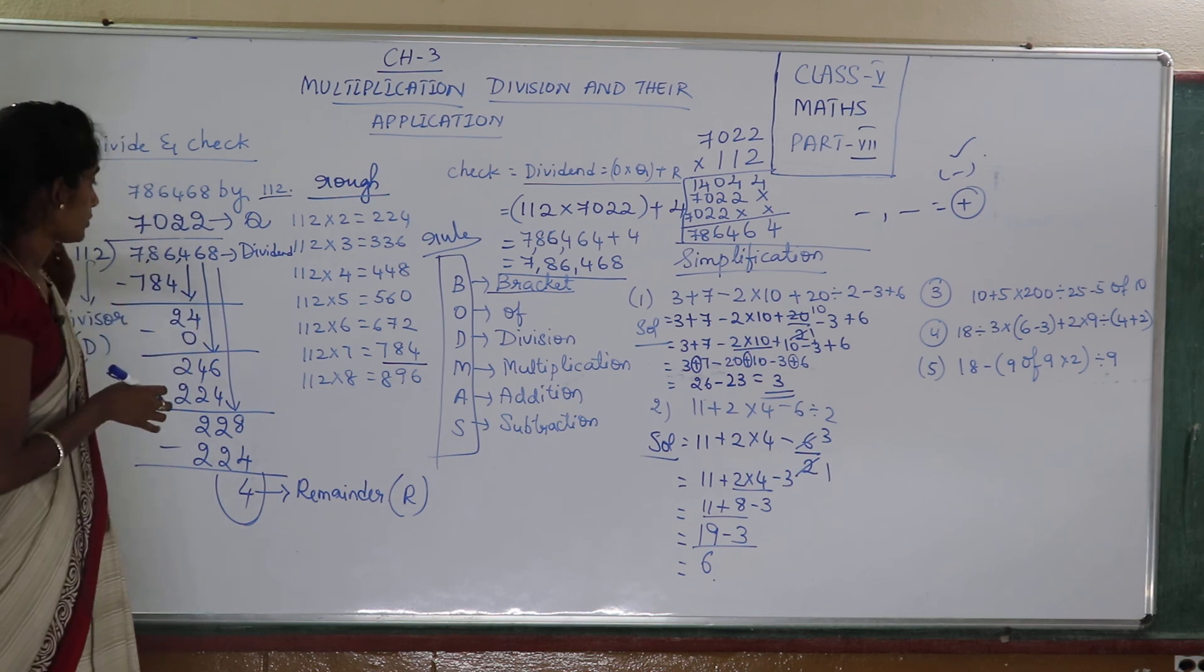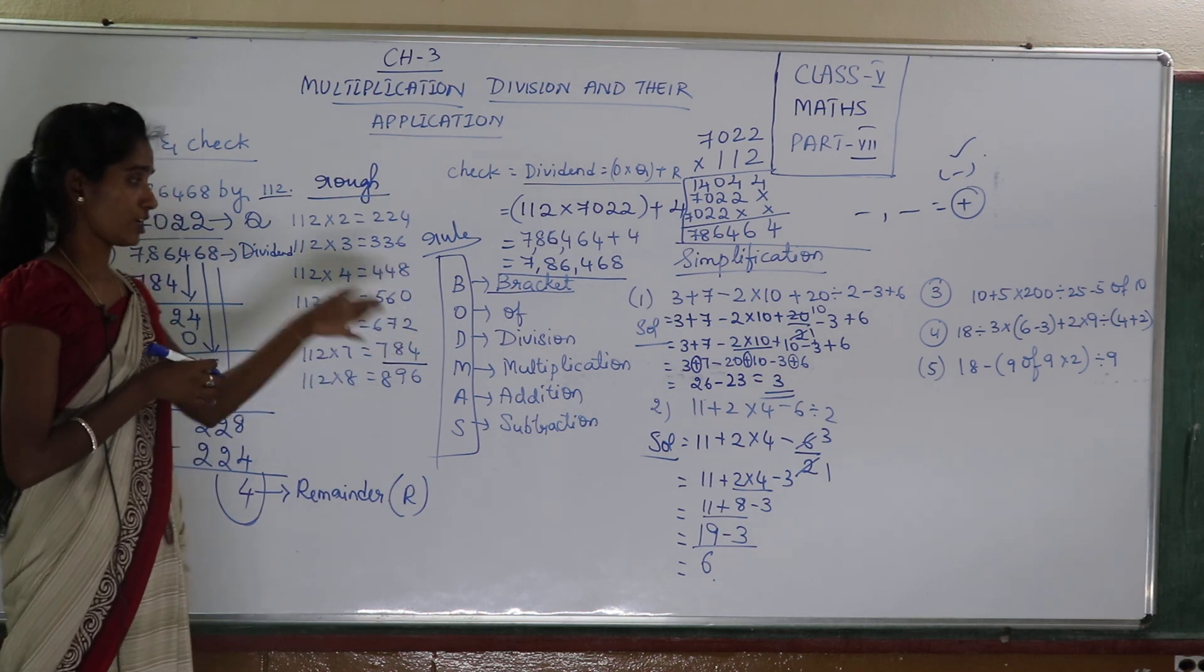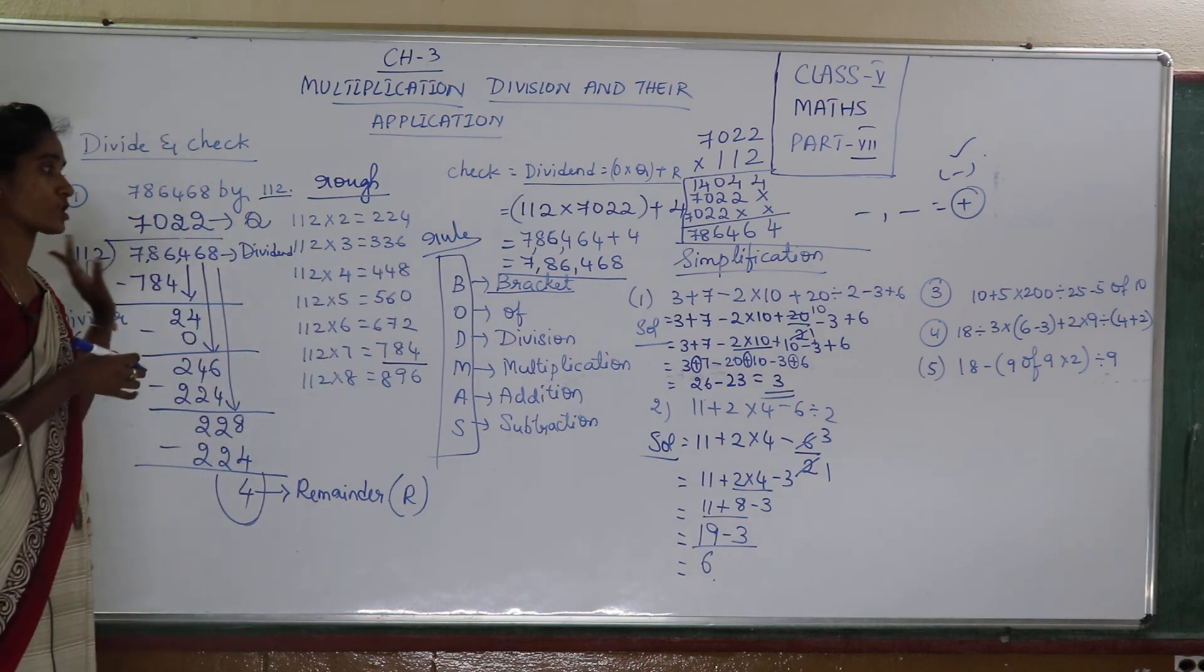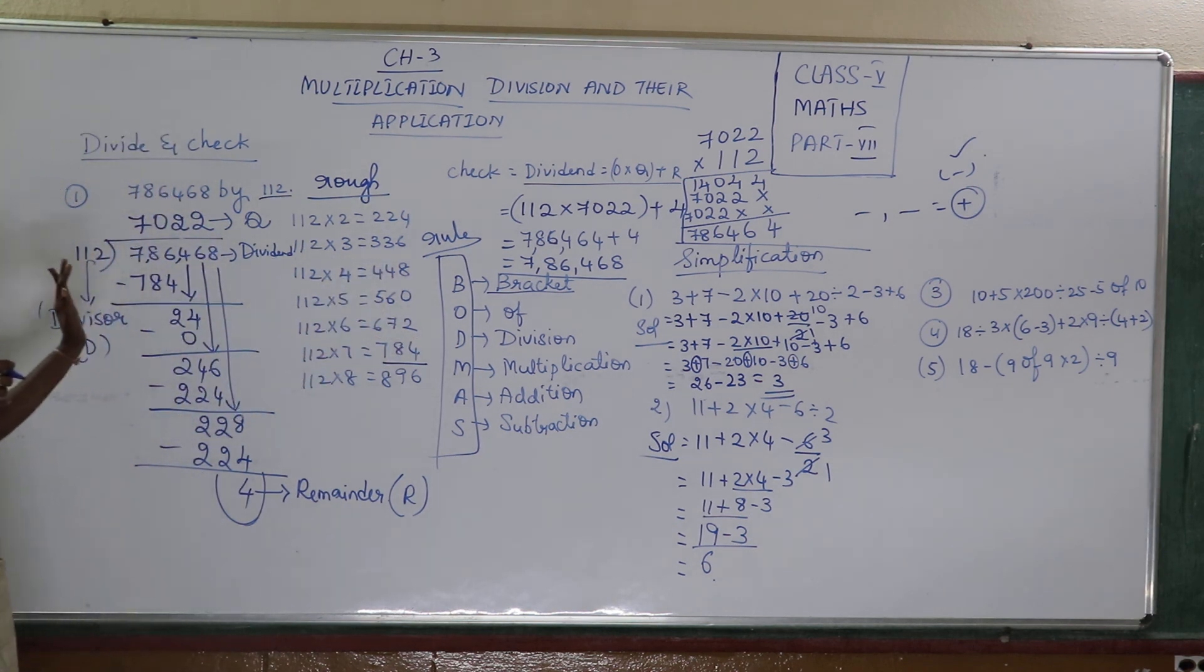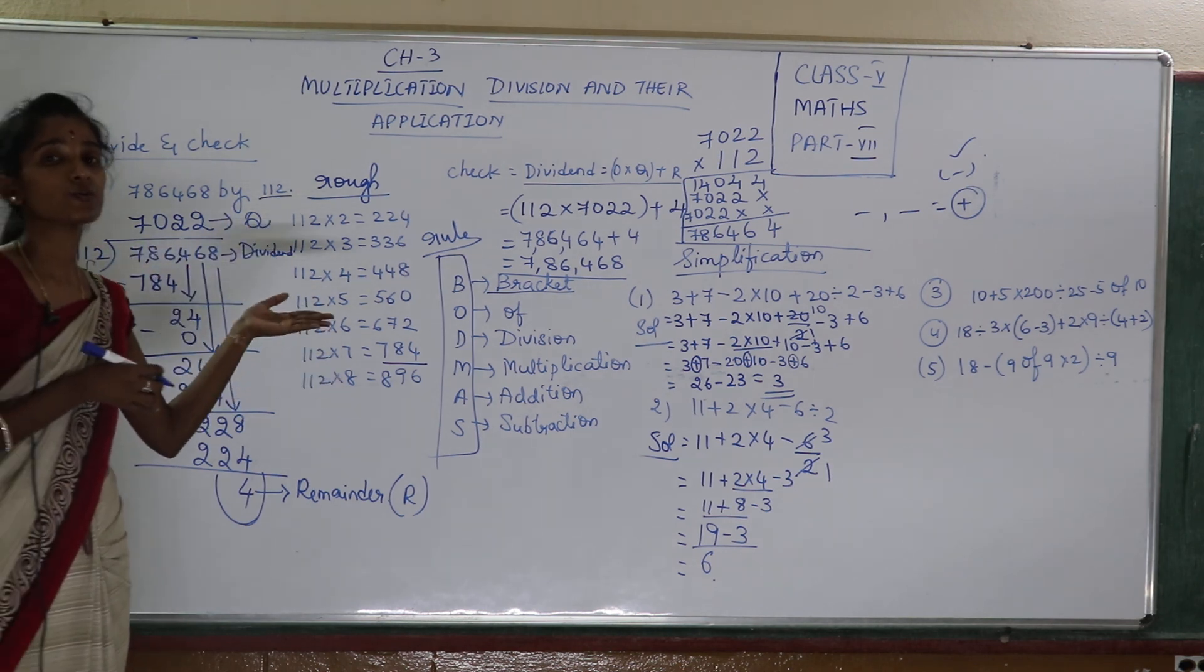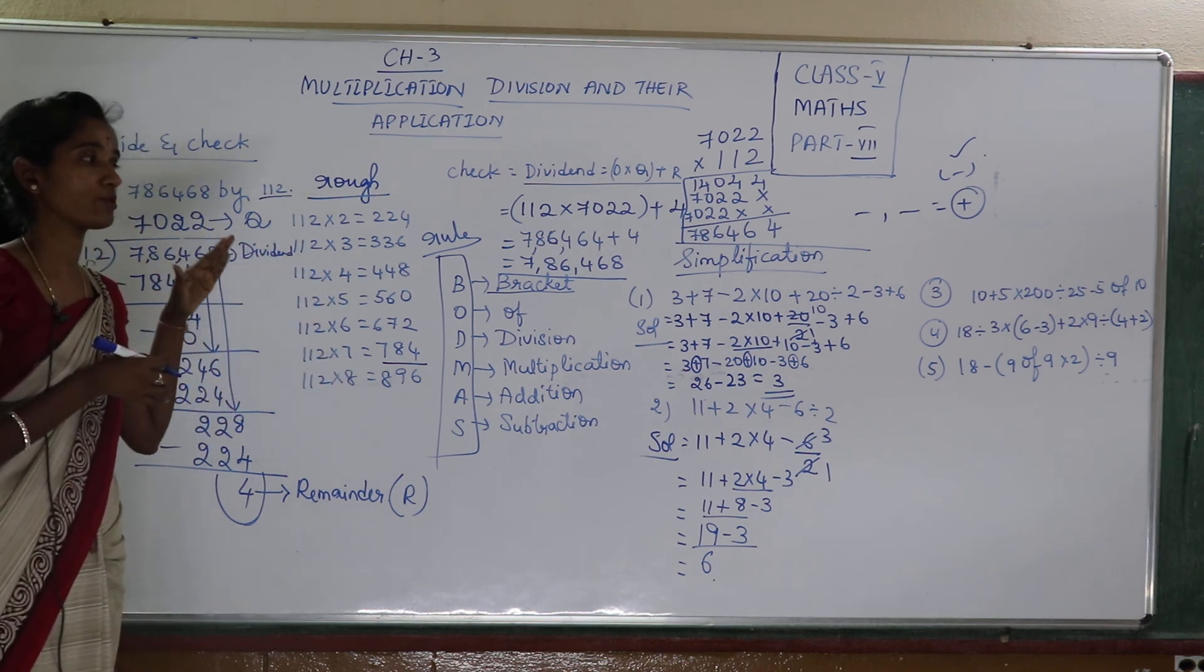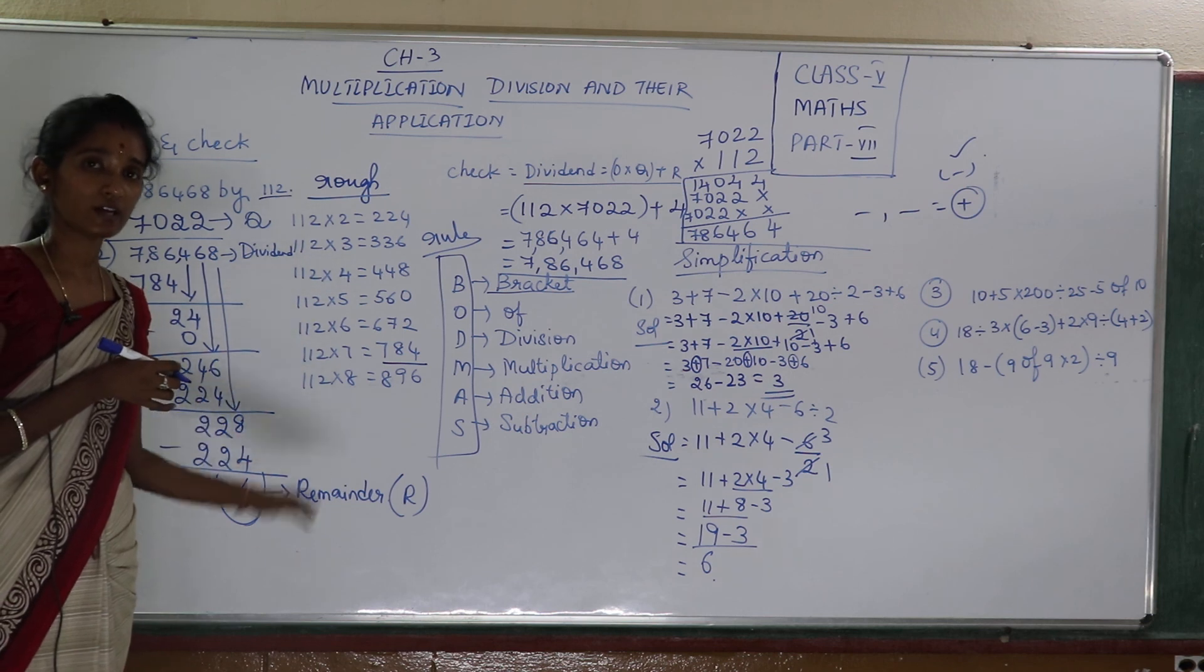Okay children. I hope you understood how to do the division and the checking part and simplification. The BODMAS rule which is very very important. And I have done two questions for you and three more questions which is written to the side of the board. You can perfectly go through the sums and follow the steps and you will be able to do the sums correctly. Thank you.